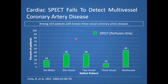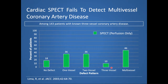This is a graph taken from a study of 143 patients with known three-vessel coronary artery disease. On the y-axis we have percent of patients; on the x-axis, various defect patterns. We see 18% of patients have no defect. In terms of one-vessel disease, 36% of patients — when in fact these patients have three-vessel coronary artery disease. A two-vessel pattern is seen in 36% of patients, and in only 10% of patients do we actually see a three-vessel pattern.